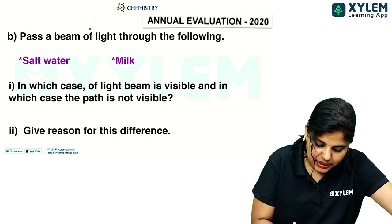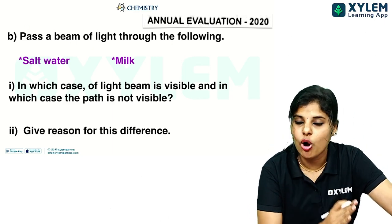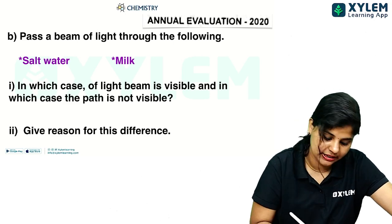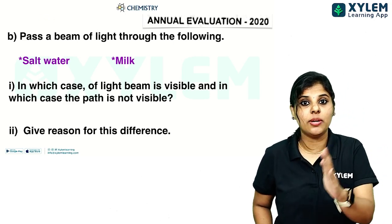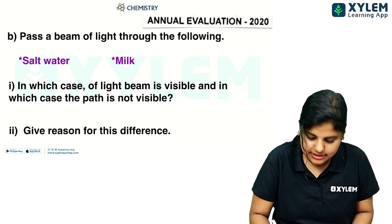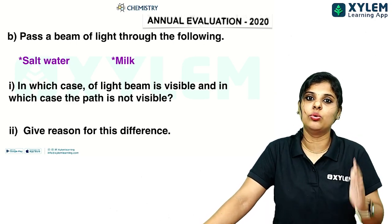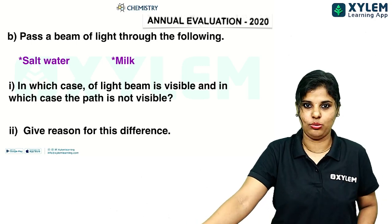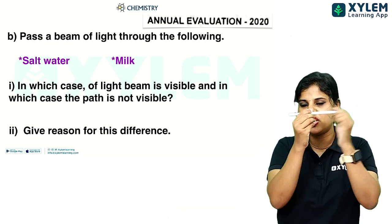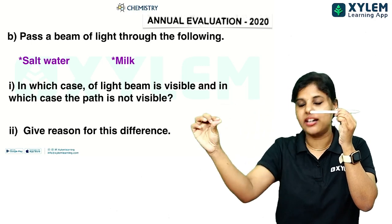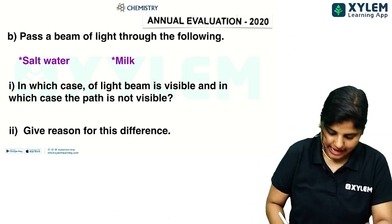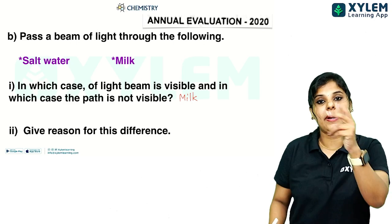Next question. Pass a beam of light through salt water and milk. In which case is the light beam visible and in which case is the path not visible? The answer is milk — we will see the light beam in milk.